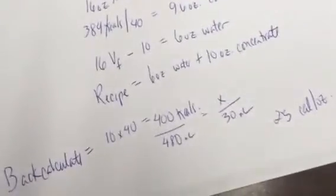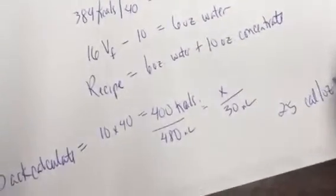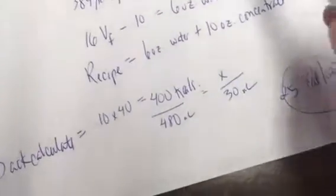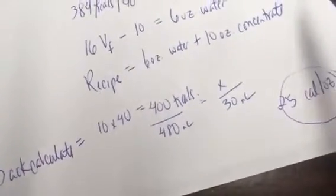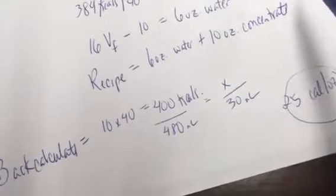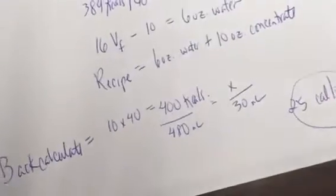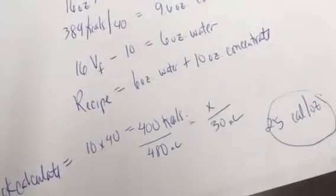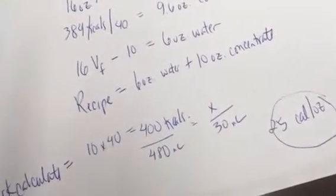So you aimed for 24, because of rounding you got 25. You could go back and use 9.5, in which case you'd be using 6.5 ounces of water. And if you do that, you'd come up with 23.8 calories per ounce. So you could use either depending on whether you want to overshoot or undershoot.